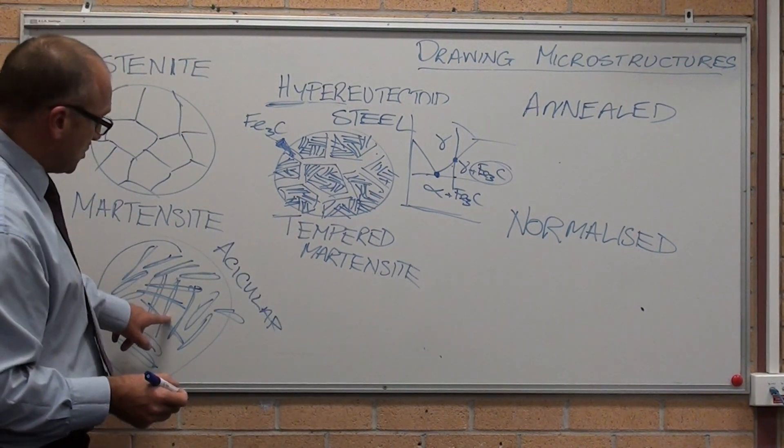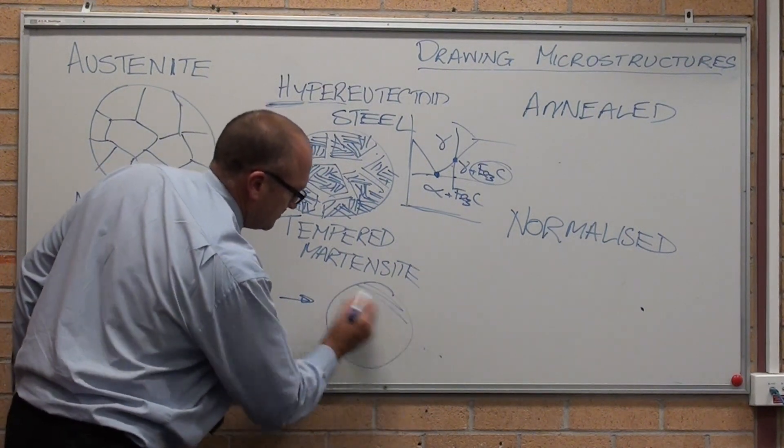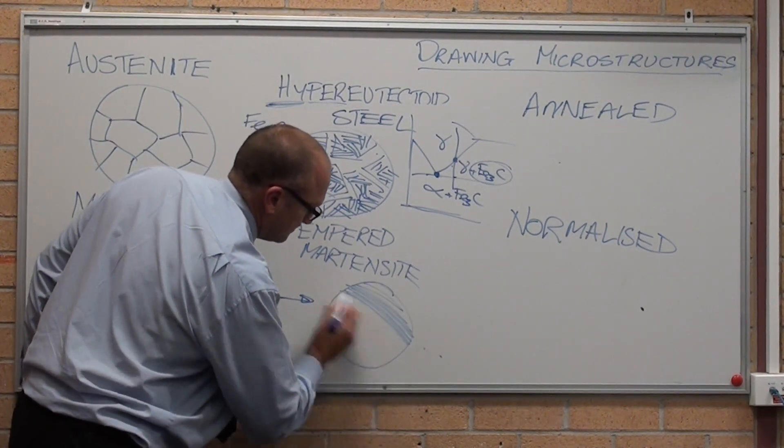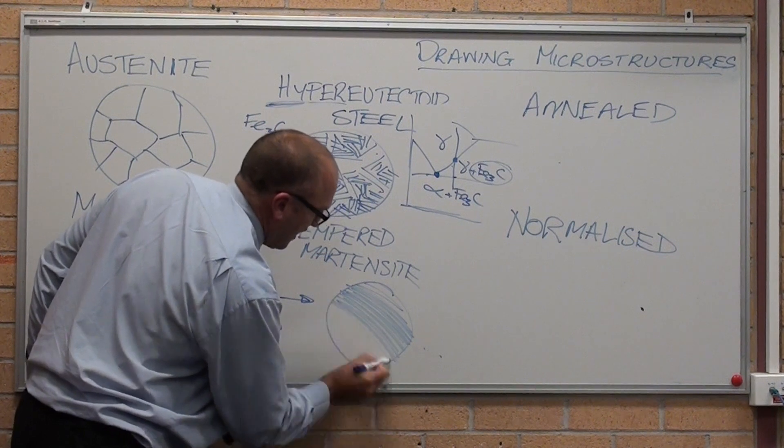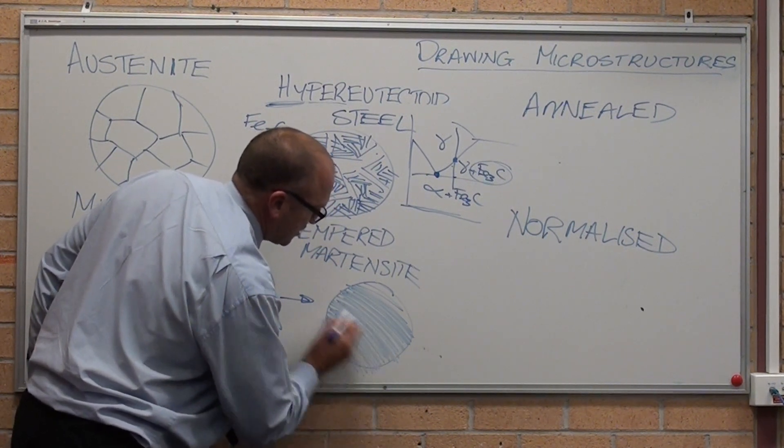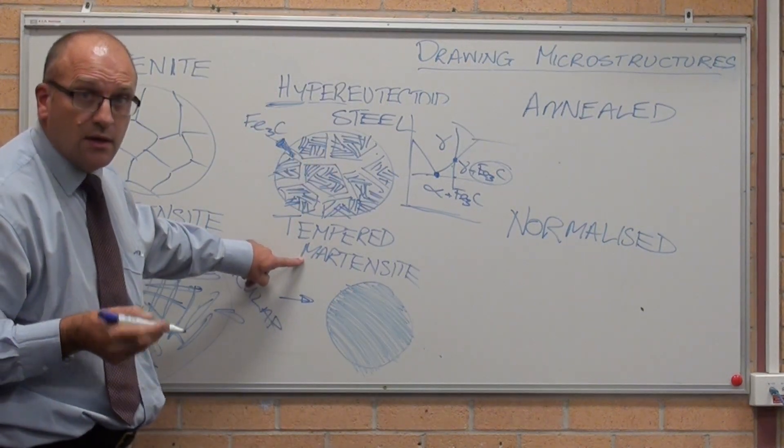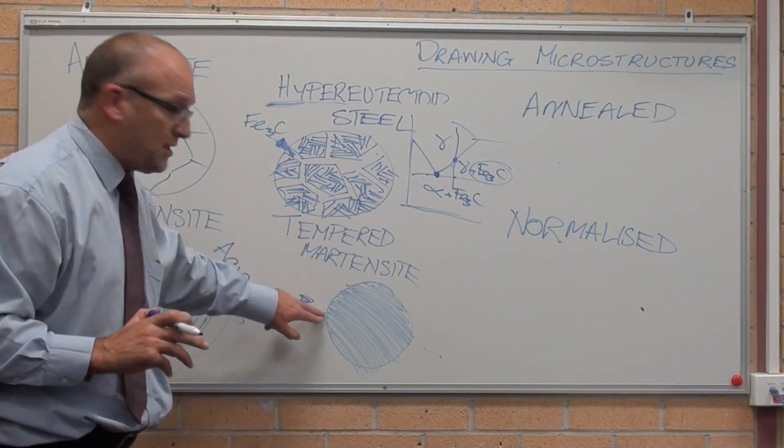If you're asked to draw martensite, it looks like that. Tempered martensite looks like... Just draw fine grey underneath. If you want, pencil and then smudge it. And just put in a line there, tempered martensite. Too fine to see anything under the microscope.